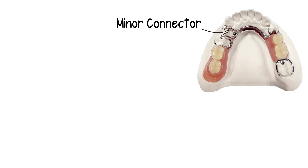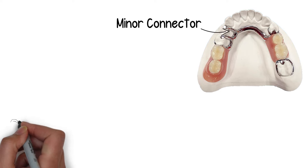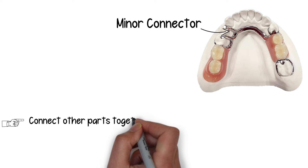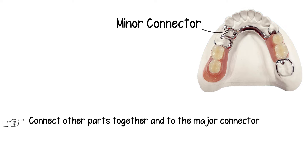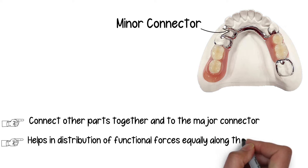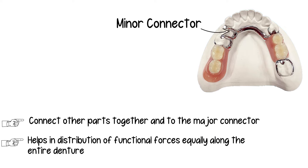The next part is the minor connector. Minor connectors, as the name suggests, also act as a bridge between parts of the prosthesis, but their role is to connect smaller parts — like the clasp assembly, indirect retainers, and occlusal rests — to the major connector. They are not responsible for connecting the two halves of the denture. By providing these small connections, the minor connector also helps in the distribution of applied functional forces, stabilizing the entirety of the prosthesis and transferring stresses evenly across its different parts.